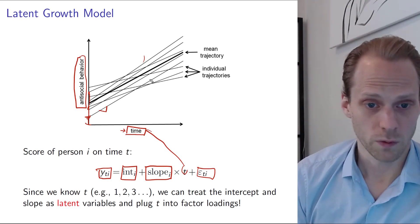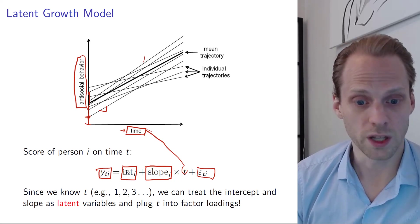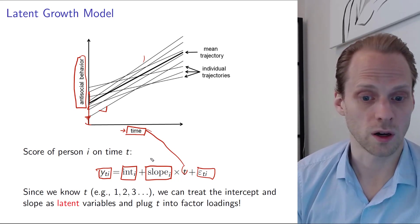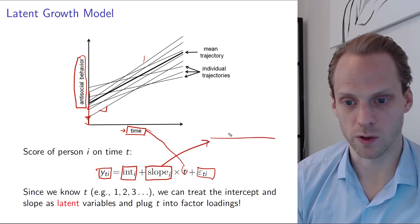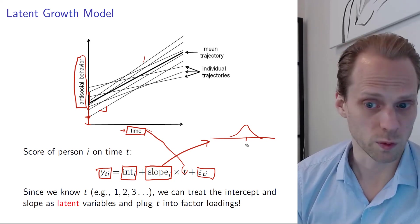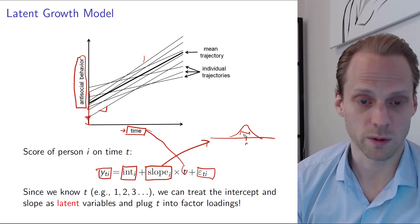And what we are then interested in is looking at the distribution of these intercepts and these slopes over people. So this slope in multi-level terms would have some sort of distribution with an average effect, which would be the fixed effect, and some spread, which would be the random effect.